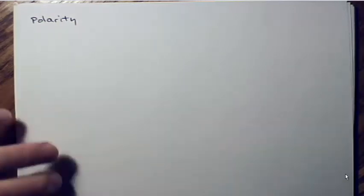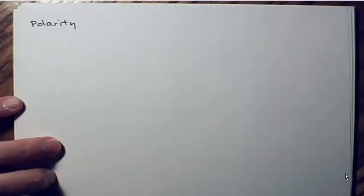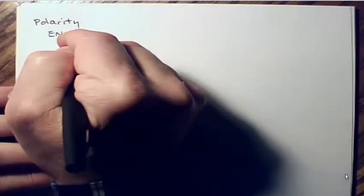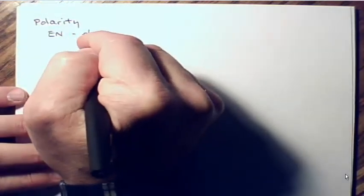We're talking about polarity. In order to understand polarity the way I explain it, you need to know a couple of symbols and terms — what the symbols stand for and what the terms mean. Here's EN. EN is just the symbol I use for something called electronegativity.